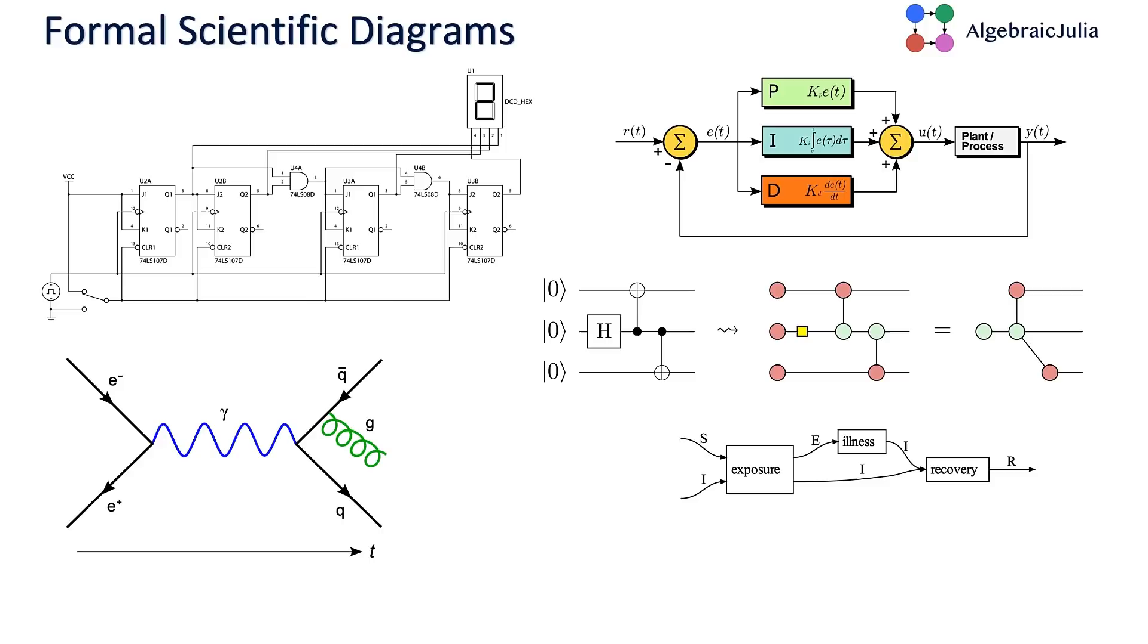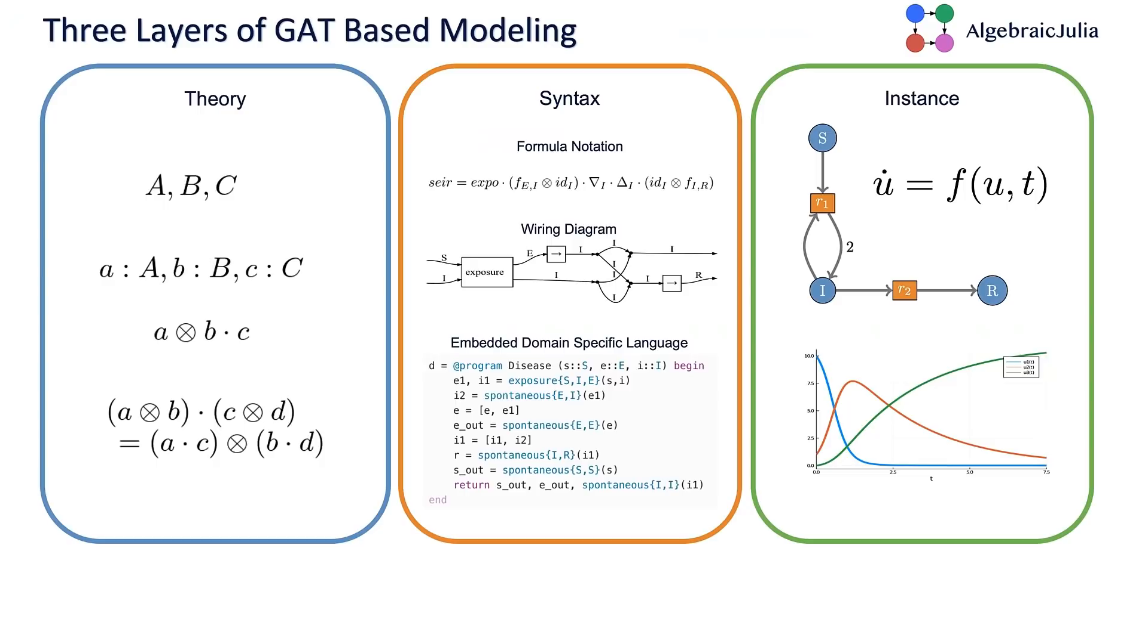One of the tools that these partially symbolic computing tools use is graphical representations of their models. For example, digital logic circuits, signal flow and control flow graphs, quantum electrodynamic Feynman diagrams, or the ZX calculus for quantum computing, or compartmental models in epidemiology. All of these formal scientific diagrams are little graphical programming languages, where you can describe physical systems and then generate simulators that will answer questions about those physical systems.